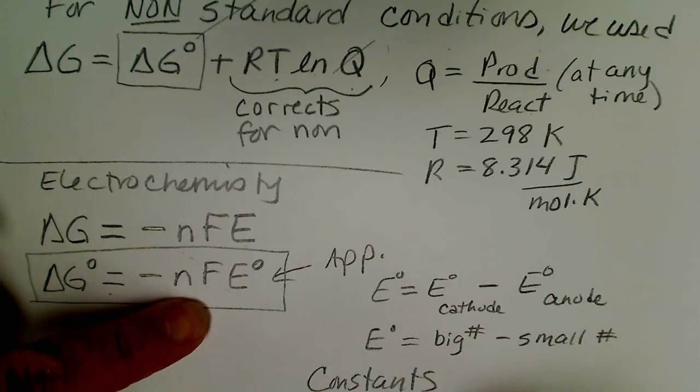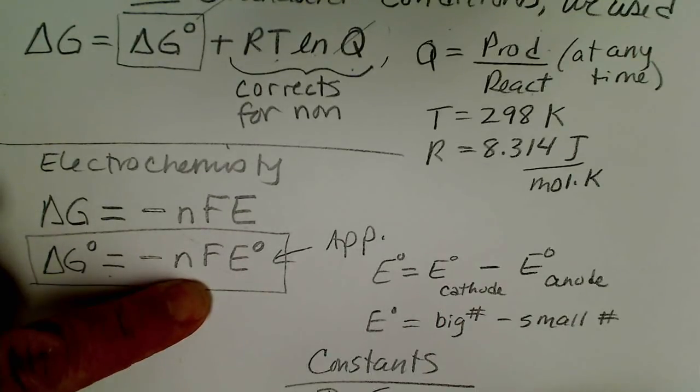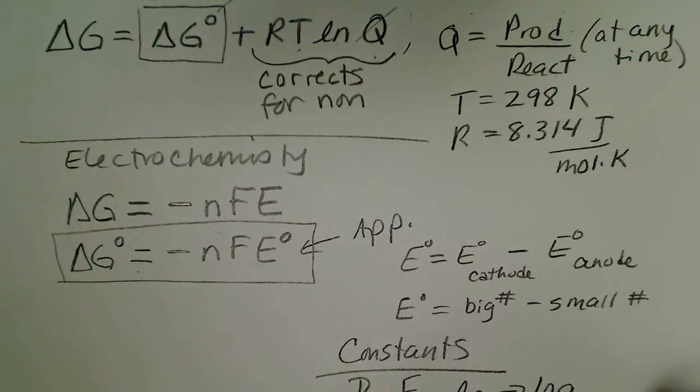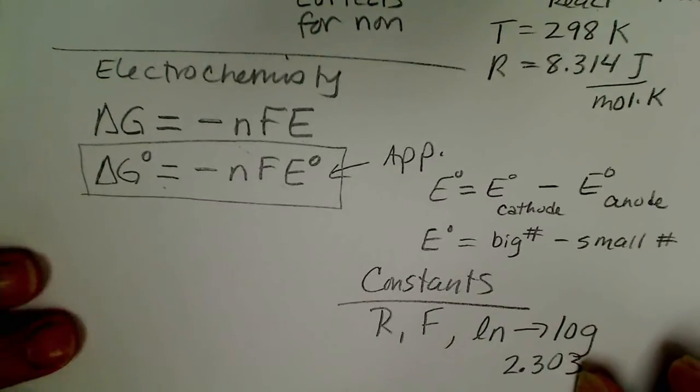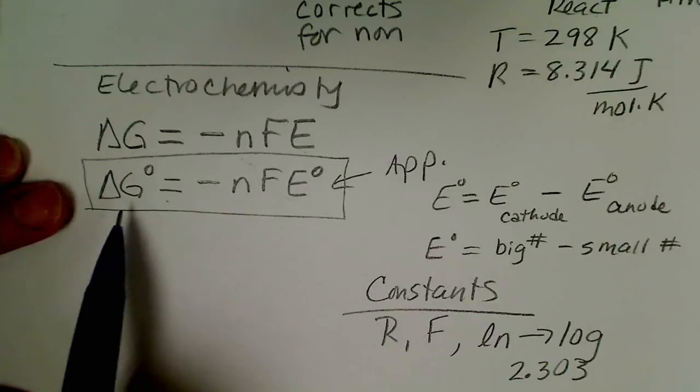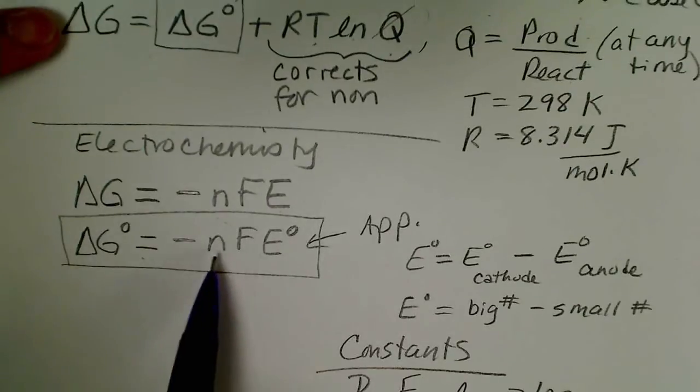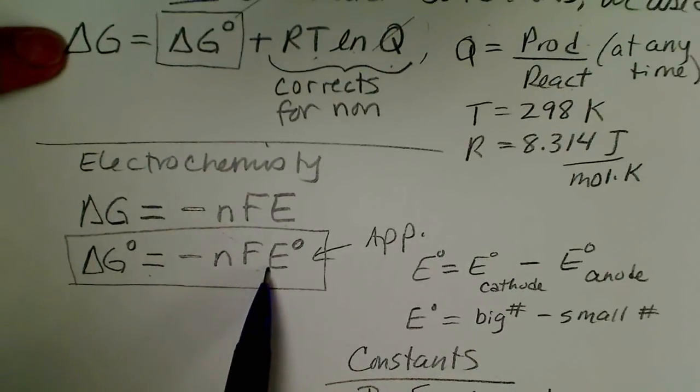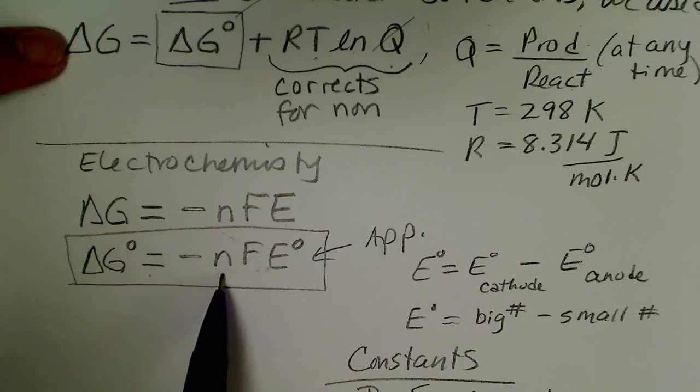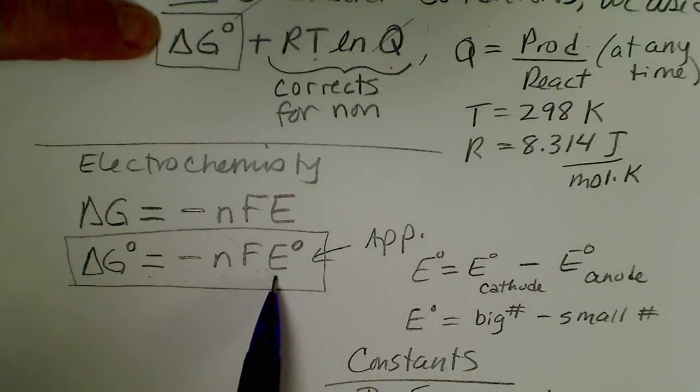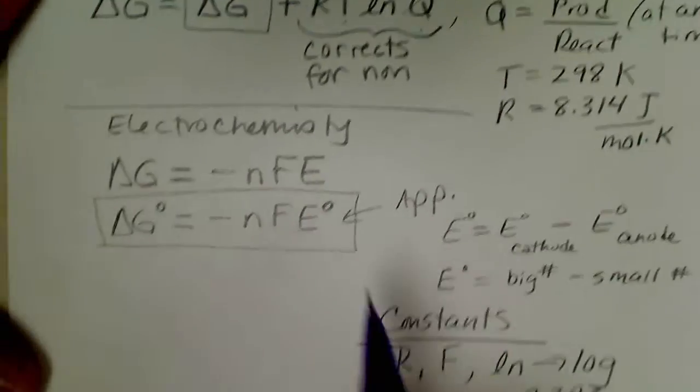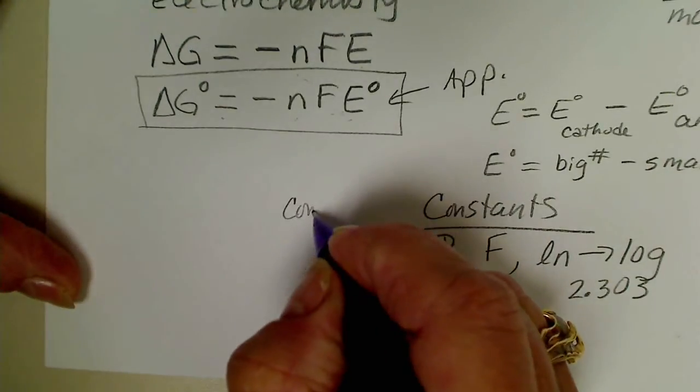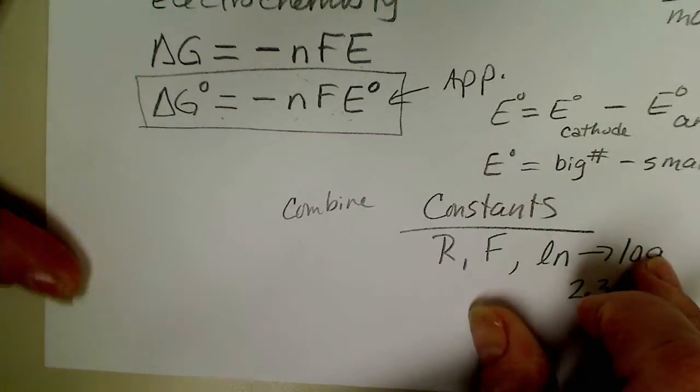And what we're going to do to change from the natural log to the base 10 log that is a factor of 2.303. You really don't need to know any of this but if we plug negative nFE into this equation and negative nFE° into this equation.